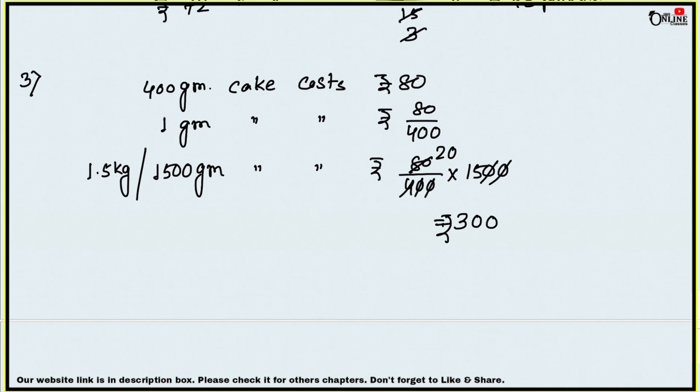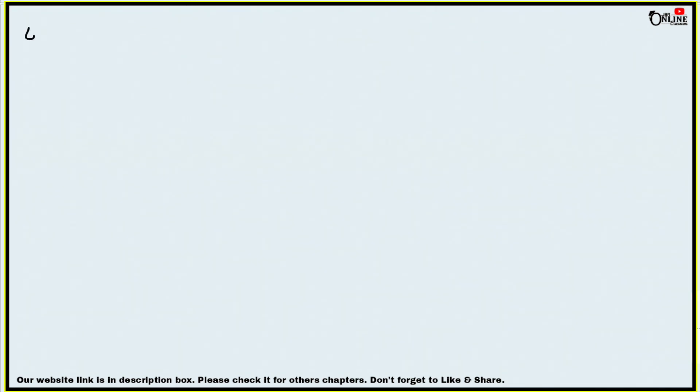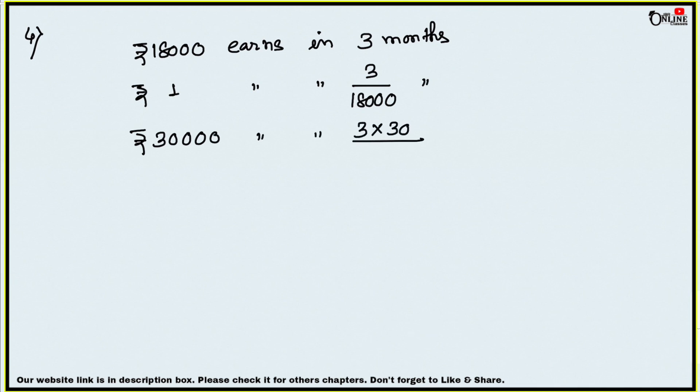Number four: A man earns 18,000 in three months. How much time would he take to earn 30,000? Rupees 18,000 is earned in three months. Rupees 1 is earned in 3 by 18,000 months. Rupees 30,000 is earned in 3 into 30,000 by 18,000 months. That equals five months. That is the answer.